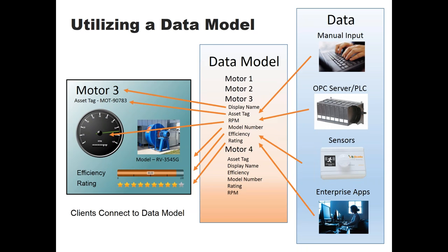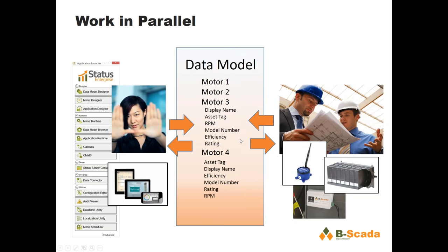What happens with a model is the data comes into the model, the client applications talk to the model, and all the complexity of getting the data into the system is abstracted away from your client applications. This creates a much more organized system that can be put together a lot faster. If you have your data model built, your client applications can start being built against that model even if your live data hasn't been brought in yet.